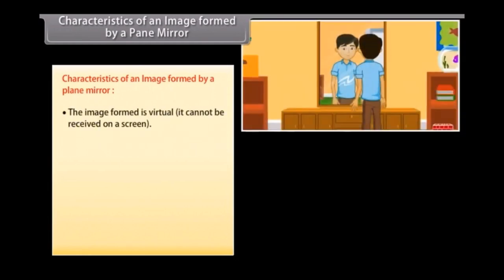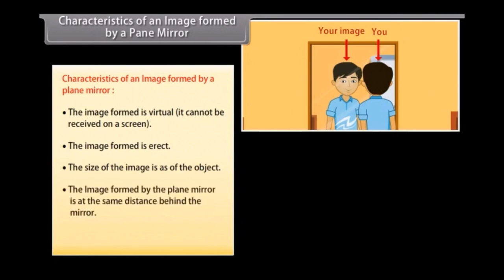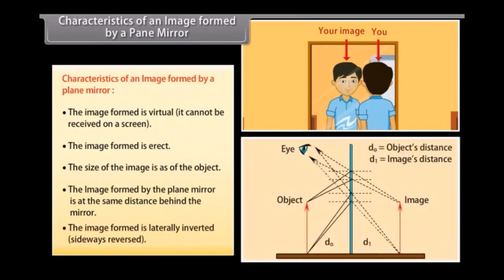Characteristics of an image formed by a plane mirror. The image formed is virtual; it cannot be received on a screen. The image formed is erect. The size of the image is the same as the object. The image formed by the plane mirror is at the same distance behind the mirror. The image formed is laterally inverted, sideways reversed.